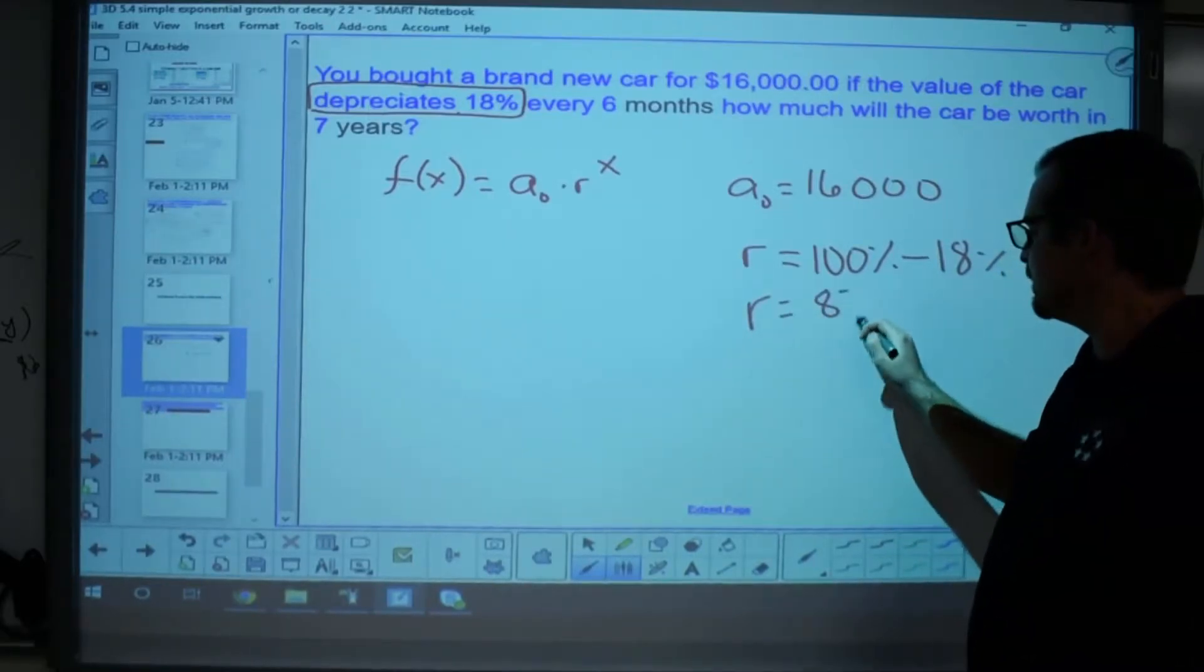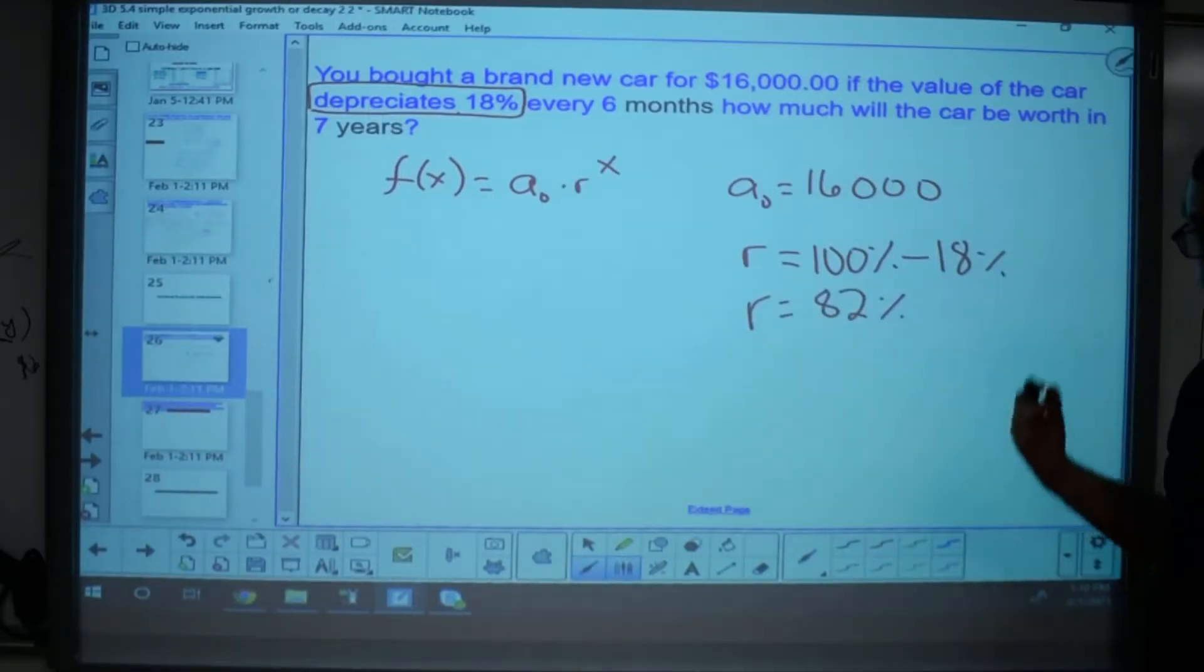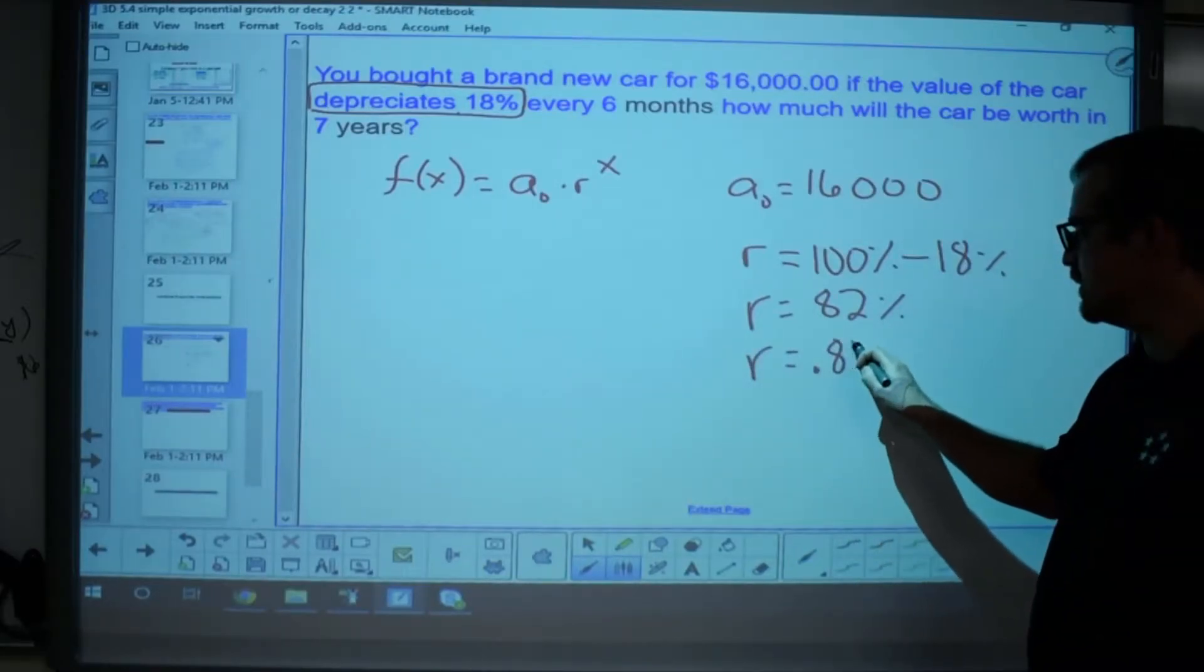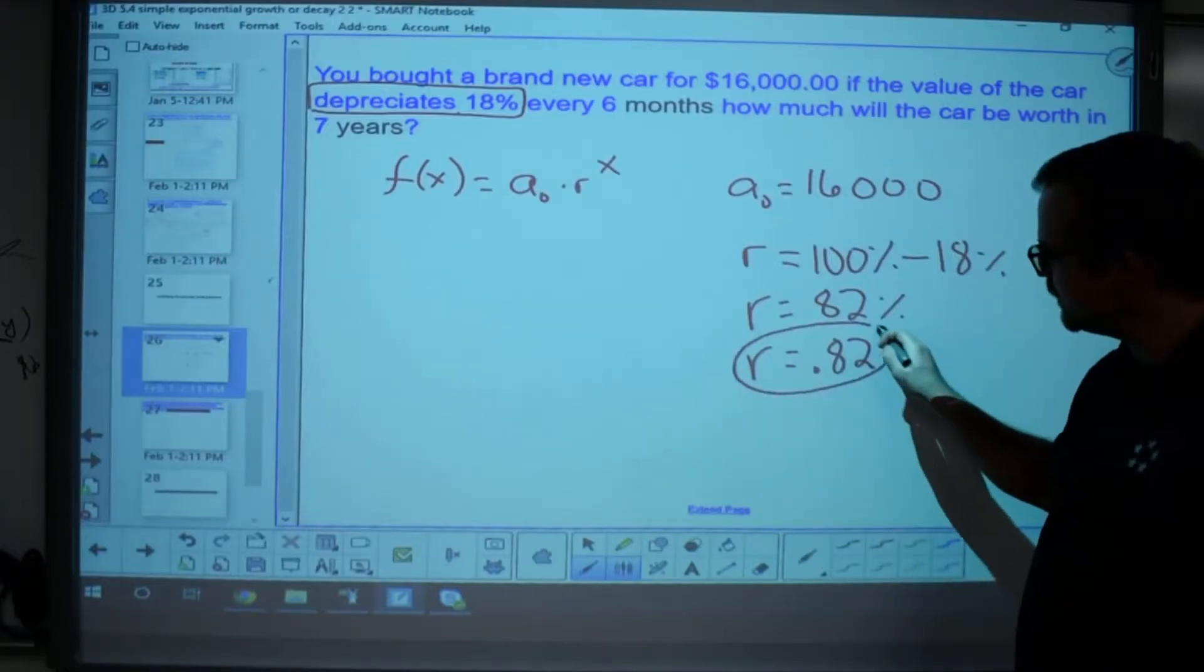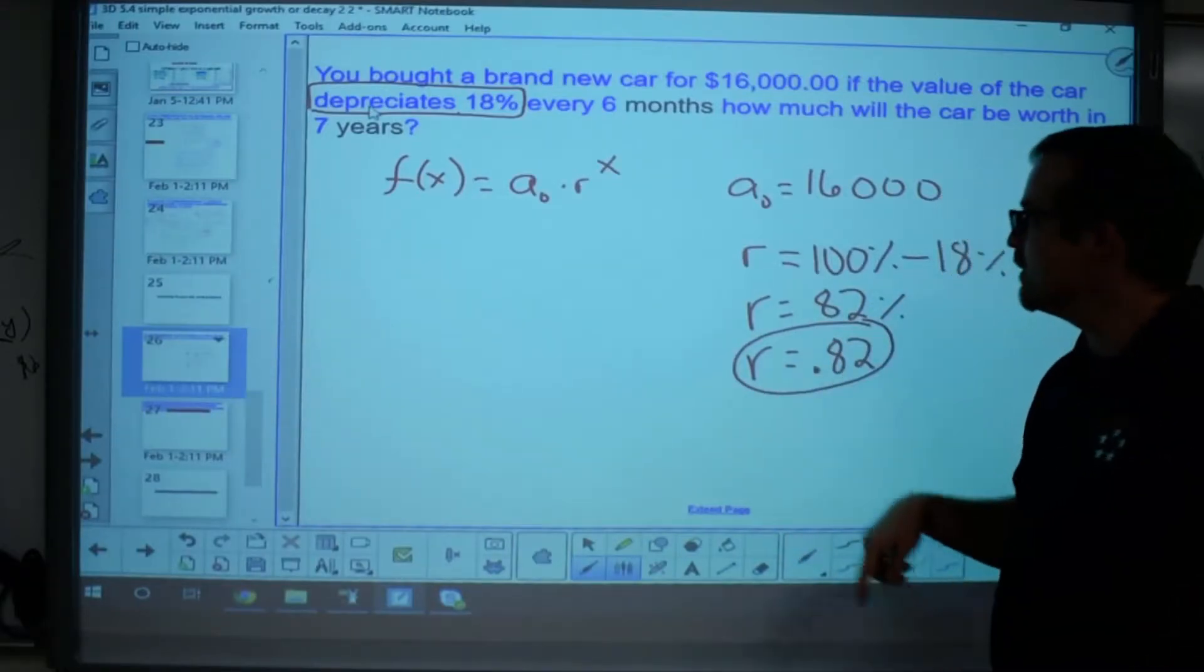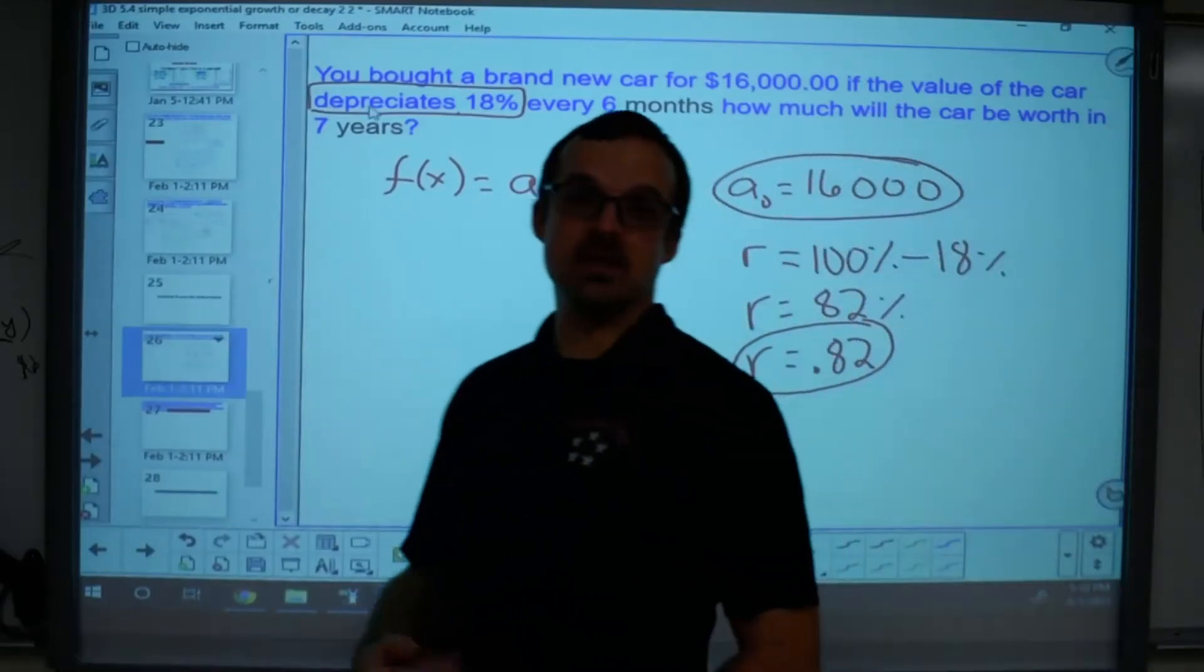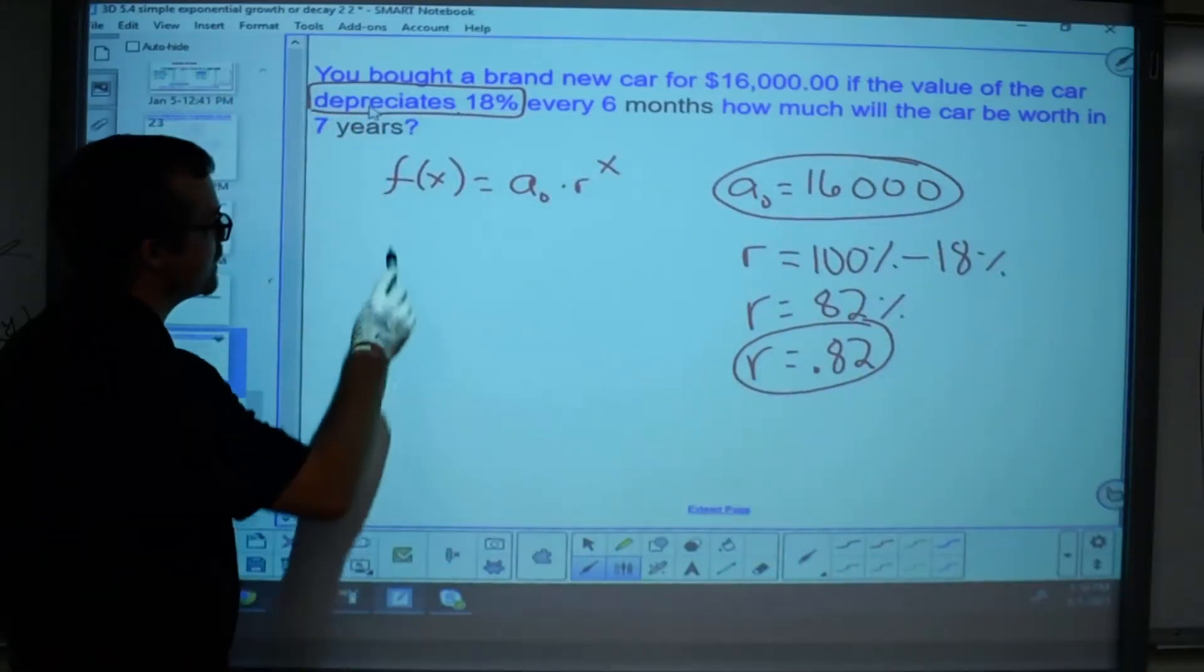So, this is 82% problem. I can't write it as a percentage. I have to write this as a decimal, 0.82, and that should be less than one because the value of the car is going down. Now, the ratio, and I have the initial amount. I can actually write the function that represents the value of my car over the next few years.